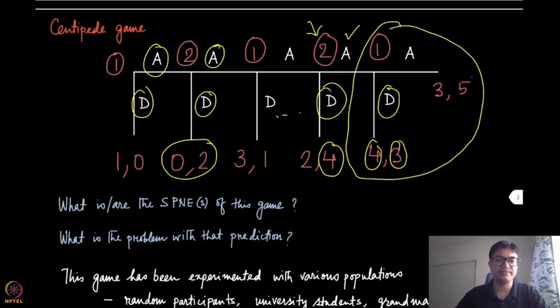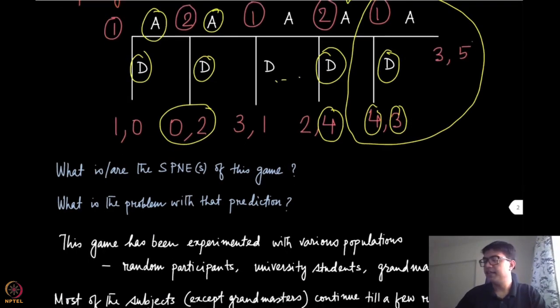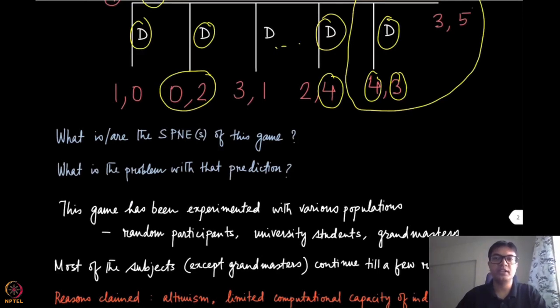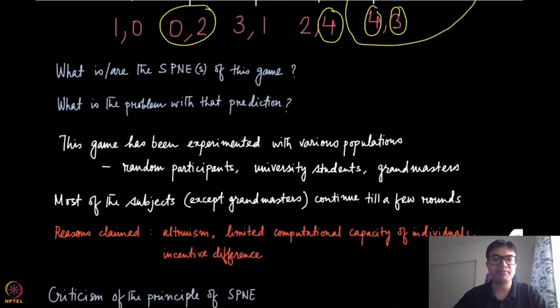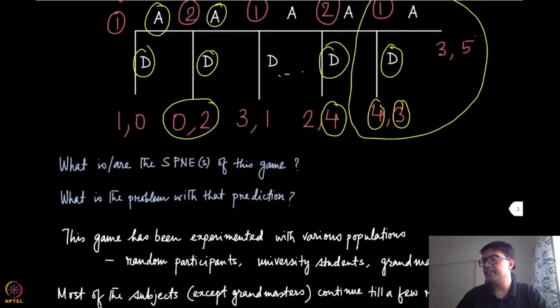Now what is the problem with this prediction? There has been extensive studies of real world, real people playing this centipede game, and the populations were random participants, university students, or even grandmasters of chess. Almost all of them have played it at least for few rounds, so it never happened that it ends at the very beginning.